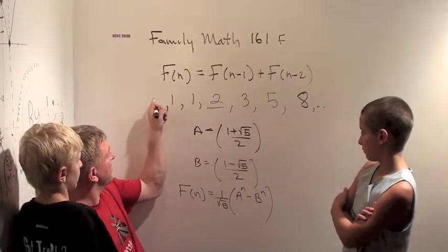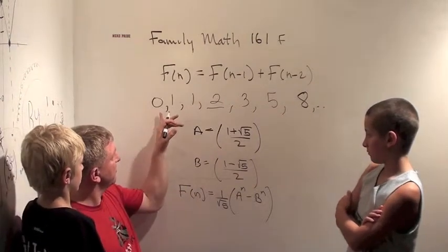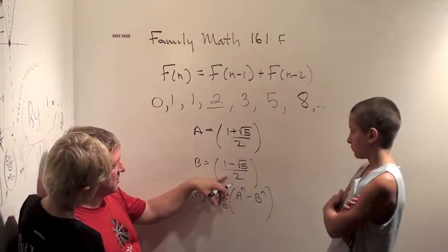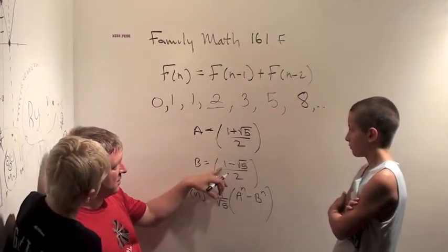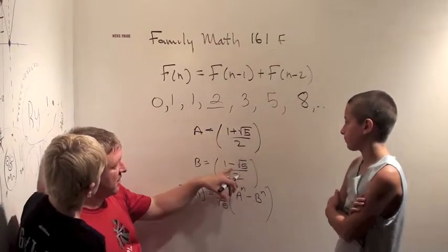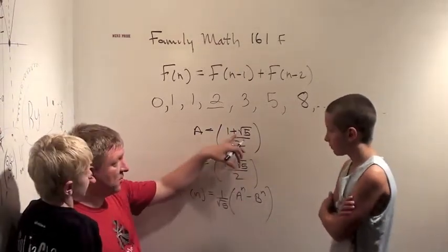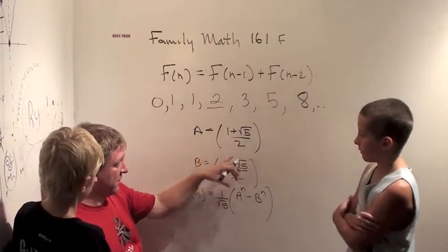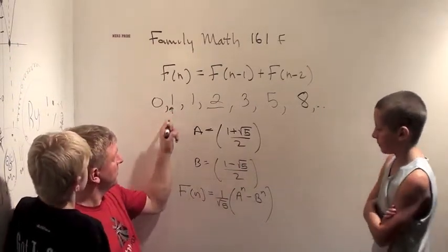Actually, in order to make this right, I've got to start with zero. I'd say the zeroth Fibonacci number is zero. The first Fibonacci number is this number minus this number. Notice that the ones will cancel. I get a plus the square root of five minus the square root of five, which is two times the square root of five divided by two. So what's that? The square root of five. Divided by the square root of five is? One. One. There we go.